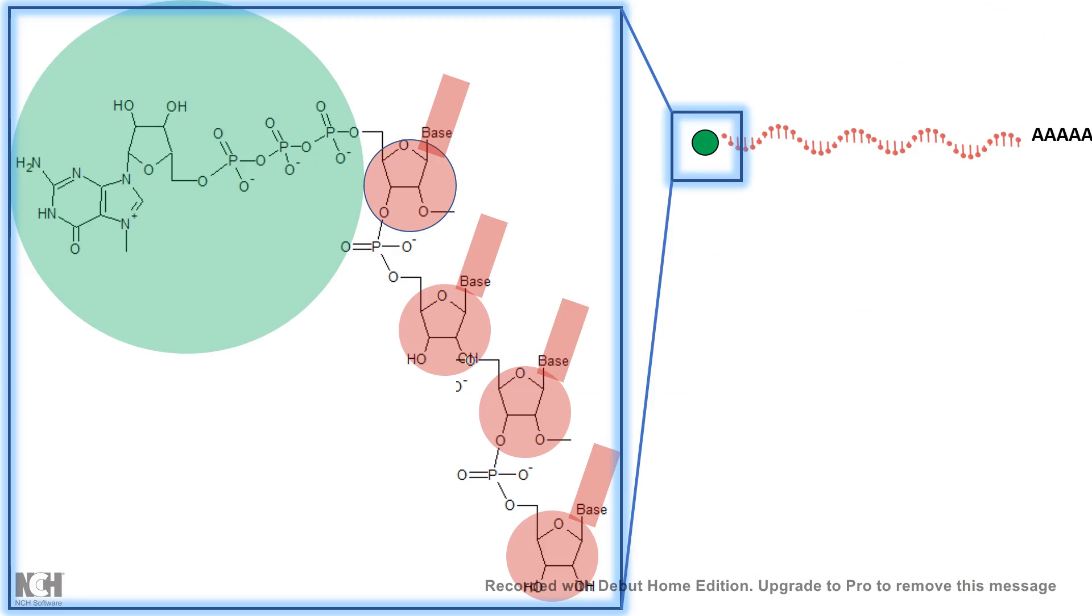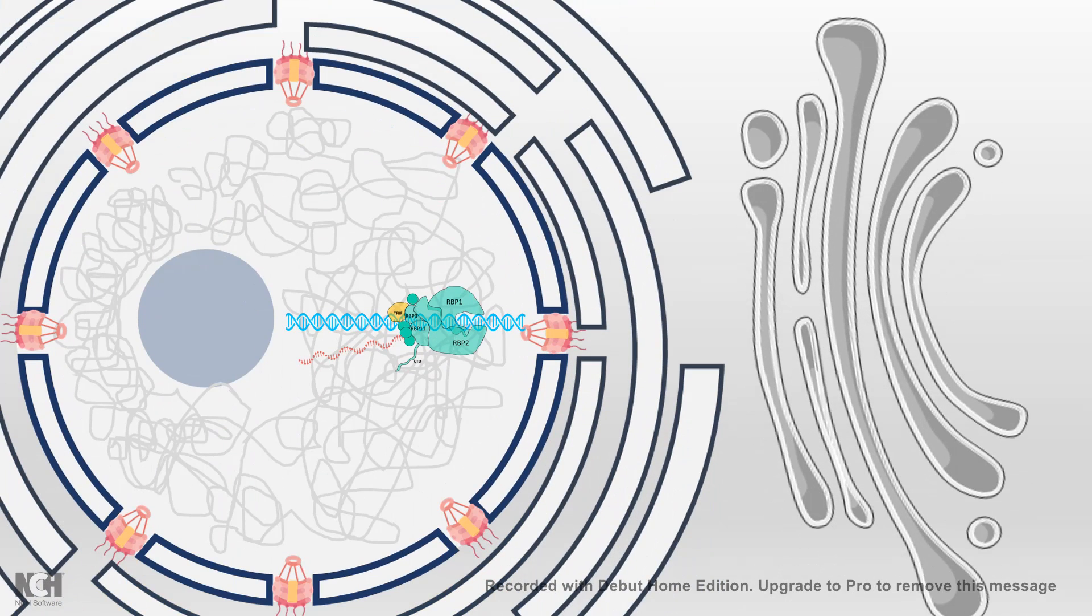This is the structure of the M7G cap, which is like a guanine cap methylated at the 7th residue. We all know that in eukaryotes, the transcription takes place inside the nucleus.